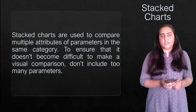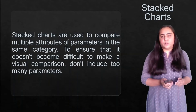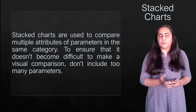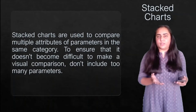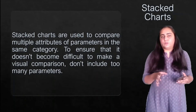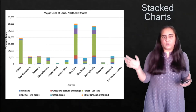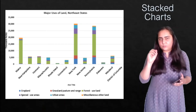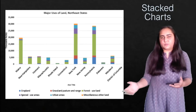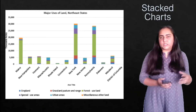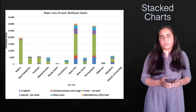Next we have stacked charts. Stacked charts are used to compare multiple attributes of parameters in the same category. To ensure it doesn't become difficult to make a visual comparison, don't include too many parameters. They look similar to histograms and bar charts, but different colors within each bar represent different parameters, with a color legend provided to explain their significance.